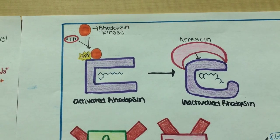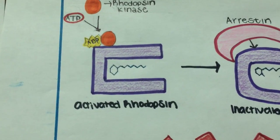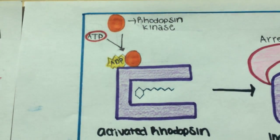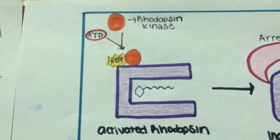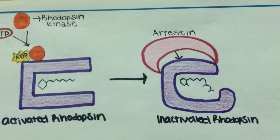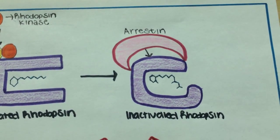The phototransduction cascade begins to come to an end when activated rhodopsin is phosphorylated by rhodopsin kinase and ADP. This allows the protein arrestin to bind to the rhodopsin and inactivate the molecule.